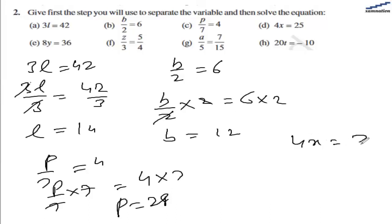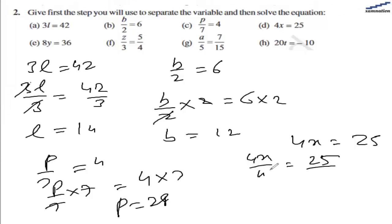For part d we have 4x equal to 25. Here we divide both sides by 4. We have 4x divided by 4 on the left hand side and 25 divided by 4 on the right hand side. The 4s cancel, and we are left with x equal to 25 by 4.